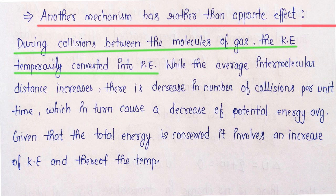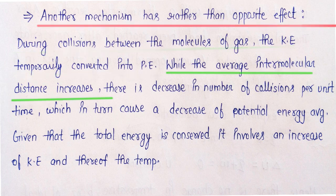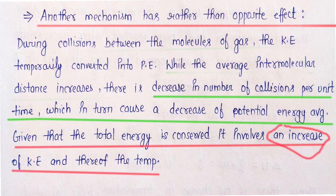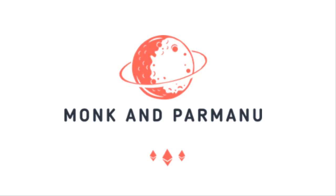Opposite effect: during collision between molecules of gas, जब molecules आपस में टकराते हैं तो temporarily kinetic energy, potential energy में convert हो जाती है। Internal molecular distances increase होने से number of collisions per unit time decrease हो जाती है, जिसकी वजह से average potential energy decrease हो जाती है। Conservation of energy की वजह से total kinetic energy increase होने लगती है, जिससे temperature increases होता है और heating effect होता है।